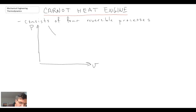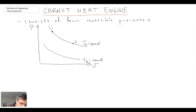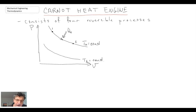We will begin with an isothermal process. There are two isothermal processes involved in a Carnot heat engine: one taking place at T-hot and the other at T-low — the source temperature and the sink temperature. We go through an expansion process from state one to state two, and that expansion takes place at constant temperature. When you expand a gas rapidly it gets cold, so in order to prevent the gas from cooling, we have heat addition. So process one to two is reversible isothermal expansion.